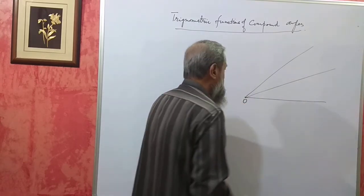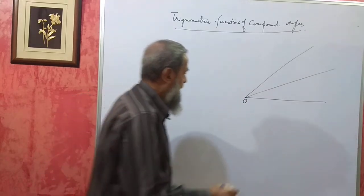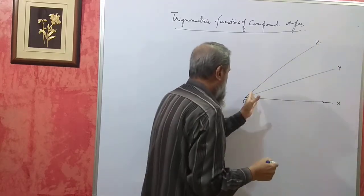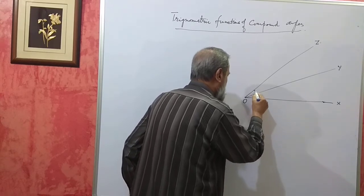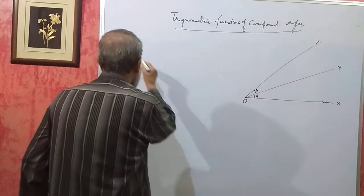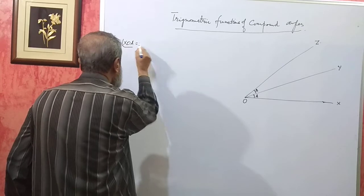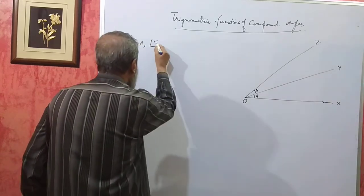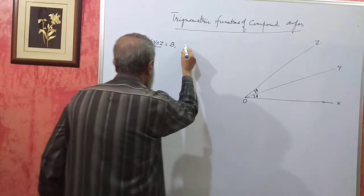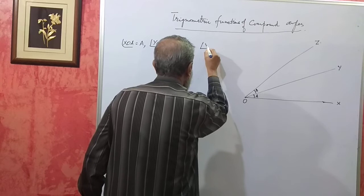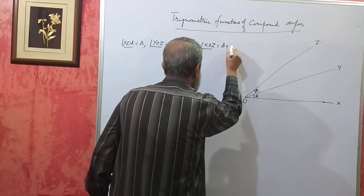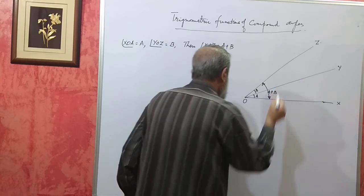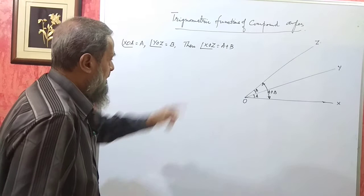Now let us say we take three straight lines meeting at O. I will call these OX, OY, and OZ. Let us say this angle XOY is A and angle YOZ is B. Then angle XOZ will be equal to A plus B — this entire angle from here to here will be A plus B. Now we will derive the formulae for sin(A+B), cos(A+B), and tan(A+B).